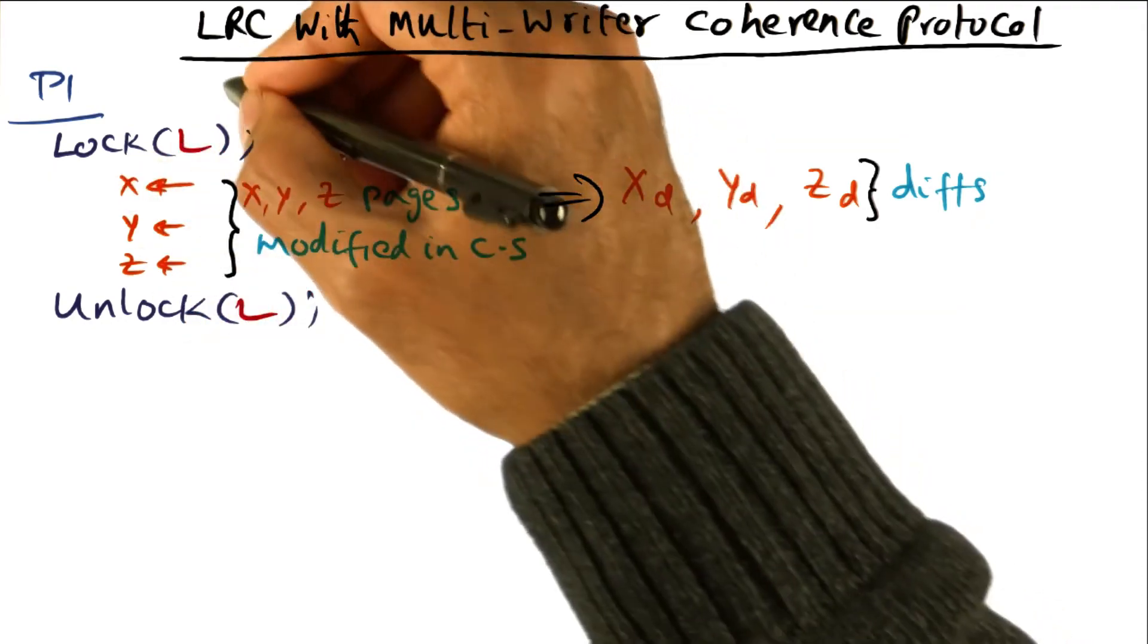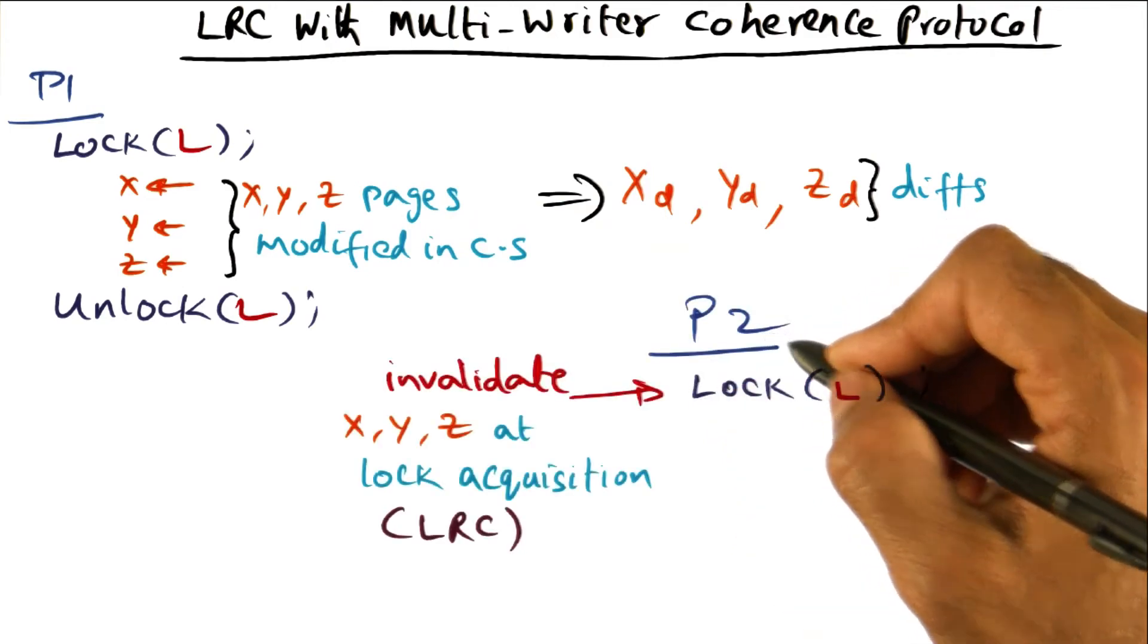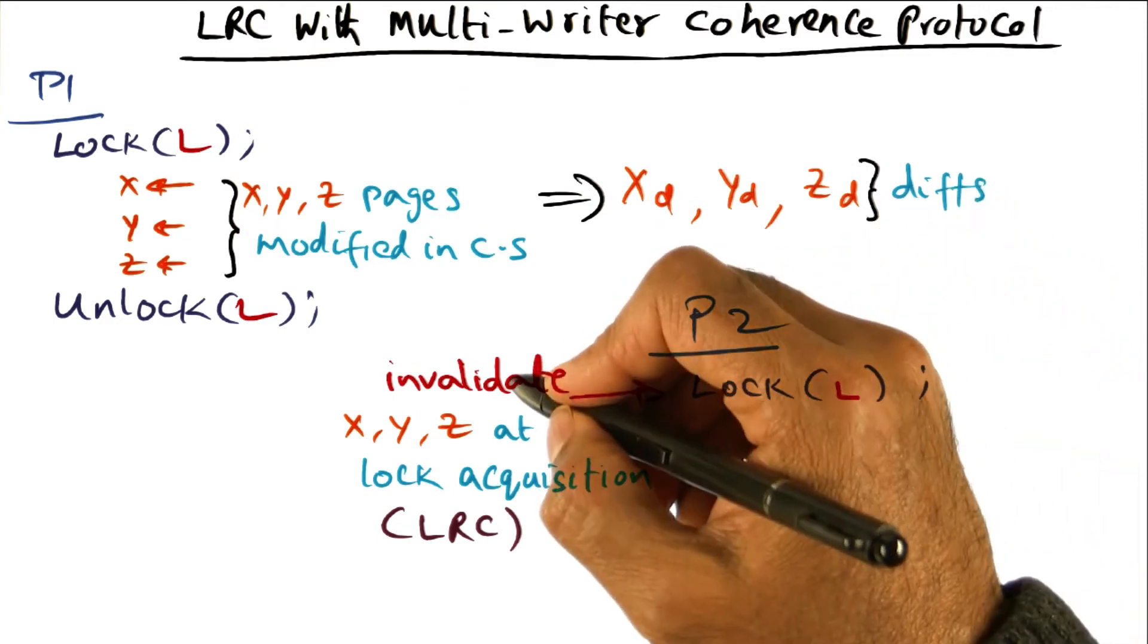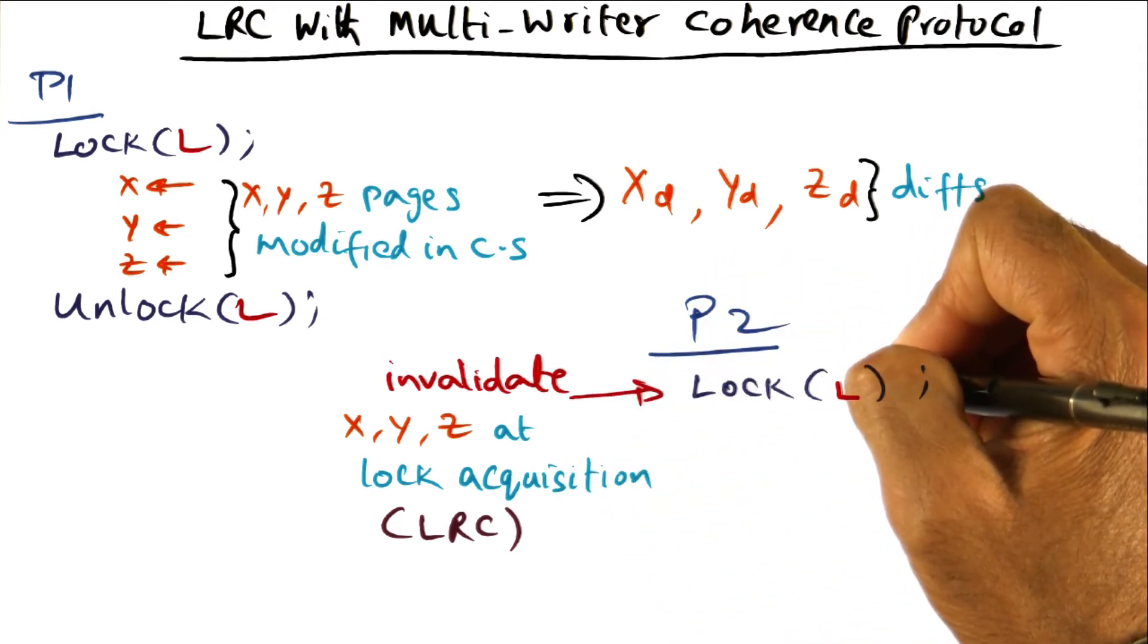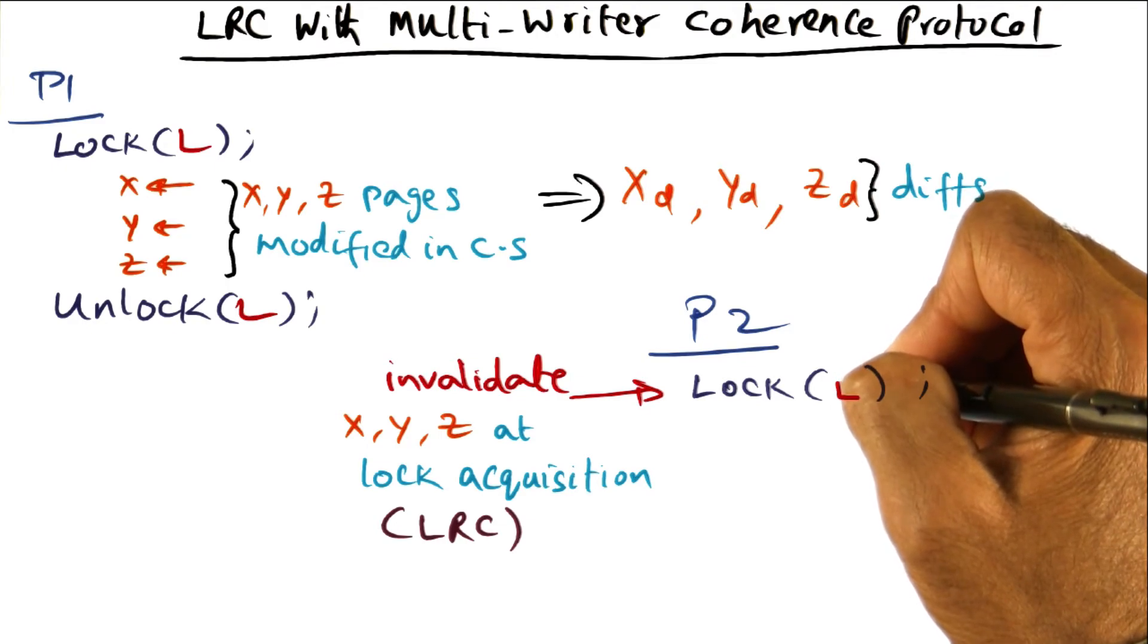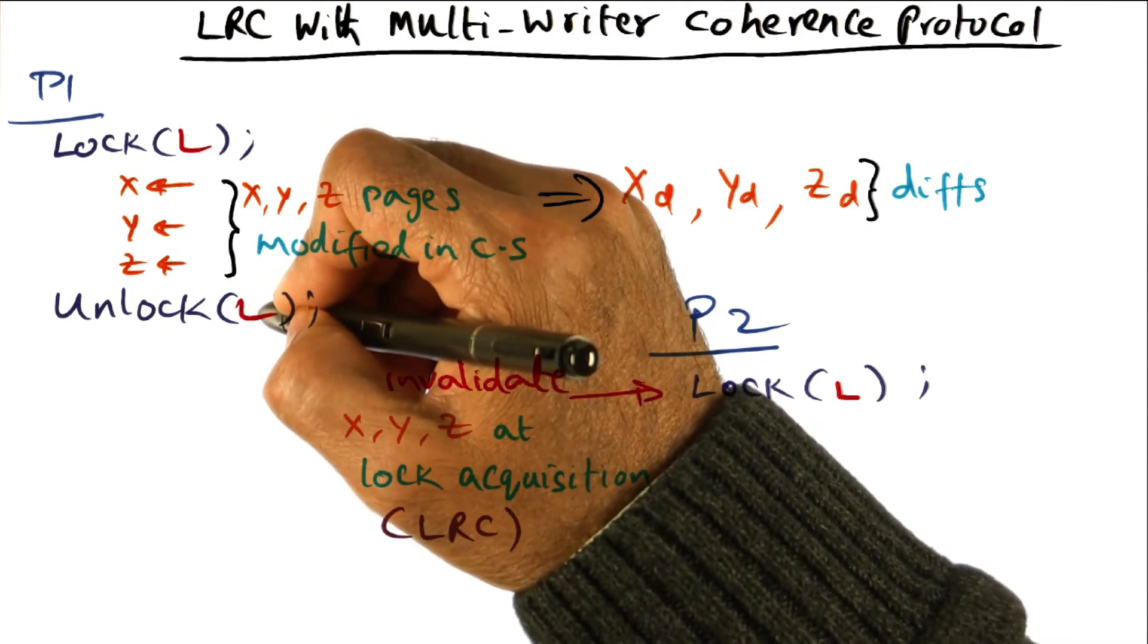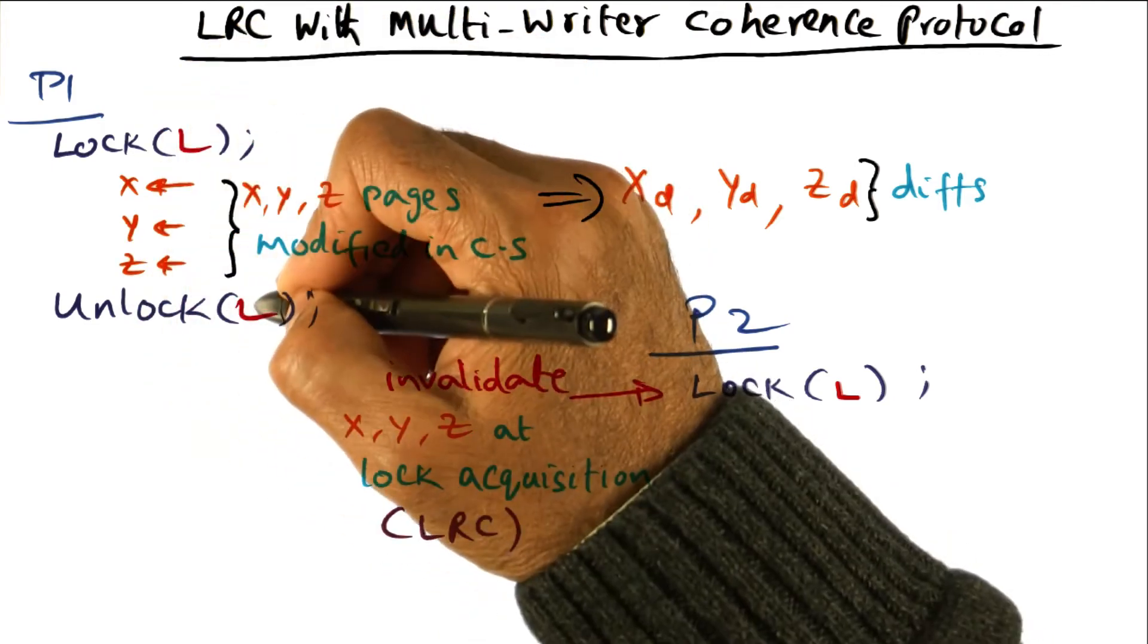The coherence protocol we're going to use is LRC, or lazy release consistency. So the next time the same lock L is requested by some other processor P2, we're going to first invalidate the pages we know were modified by the previous lock holder.